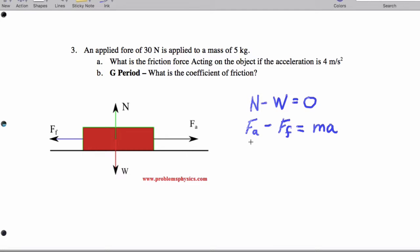So we have 30 newtons minus the force of friction, and that's going to equal M, which is 5, times A, which is 4. So when we actually isolate for part A, we'll end up getting that the friction force is 10 newtons.